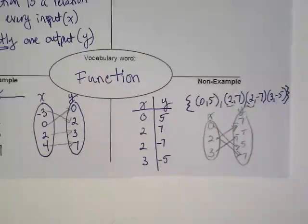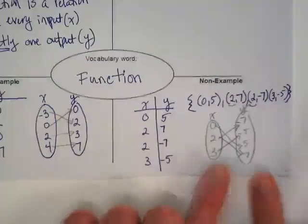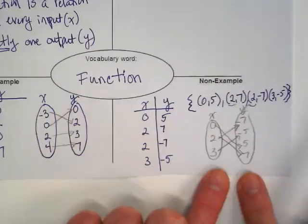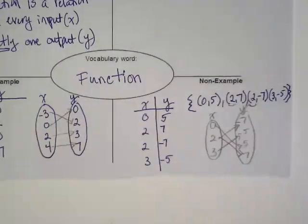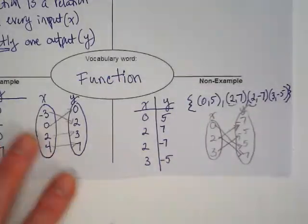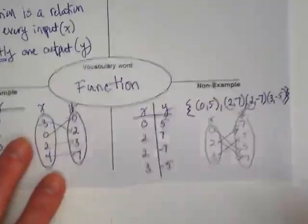When I've got just ordered pairs, this is my favorite way to check it, is to move them into a mapping diagram. Because just visually for me, seeing that one that has two arrows going off of it shows that it's not one. But we have another way to check when they're graphed.